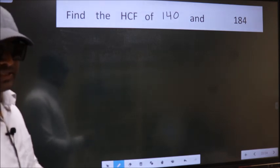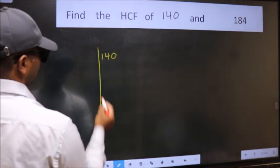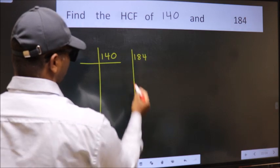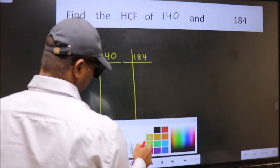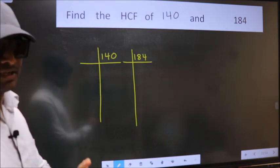What I mean is, write 140 and 184. This is your step 1. Next.